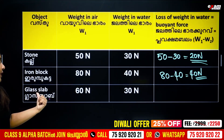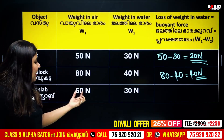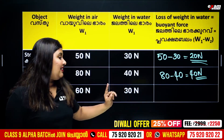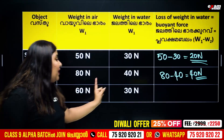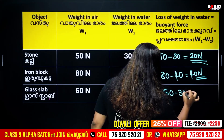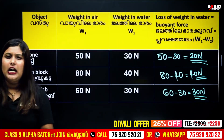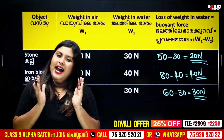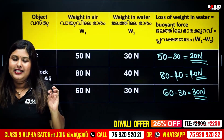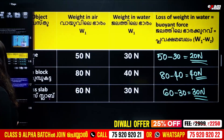60 N — we get the weight in water as 60 N. The loss of weight is 30 N, so 60 minus 30 gives 30 N. If I state the point force formula clearly: weight in air minus weight in fluid equals loss of weight.